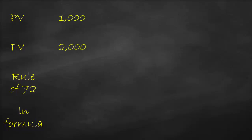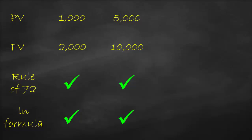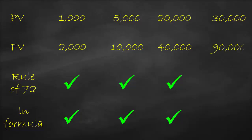Let's check some examples. If PV is 1,000 and FV is 2,000, can we use Rule of 72? Yes — FV is double PV. If PV is 5,000 and FV is 10,000, Rule of 72 applies. If PV is 20,000 and FV is 40,000, Rule of 72 applies. However, if PV is 30,000 and FV is 90,000, we cannot use Rule of 72 because FV is not double PV. The LN formula can always be used in all these cases.